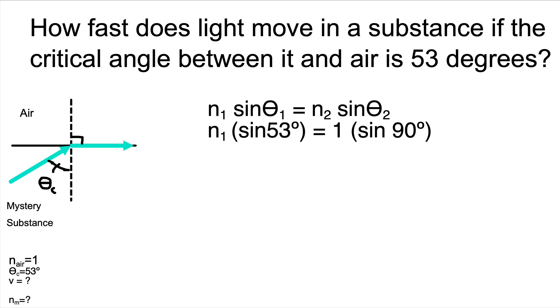That leaves us with n1 sine of 53 equals 1 times the sine of 90. Now remember that the sine of 90 is 1. You can plug that in your calculator if you want to make sure. So 1 times 1 will be 1.